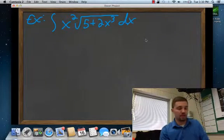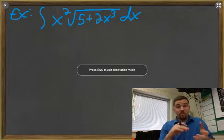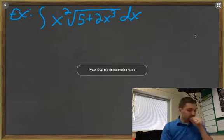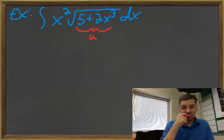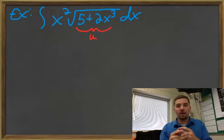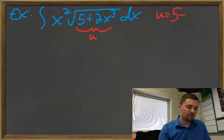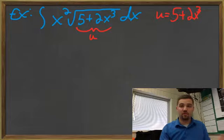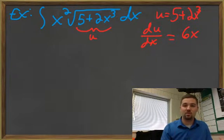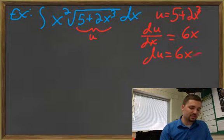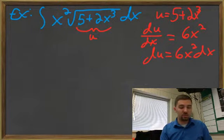Last example — let's buzz through this one. I'm looking for u first. I think I'm going to call 5 plus 2x cubed my u. How do you choose your u? I'm looking at this as a square root function, and inside the square root I've got 5 plus 2x cubed — that's how I chose u. Taking the derivative: du/dx equals 6x squared. I'm looking to get just du by itself, so du equals 6x squared dx, which is really good because I've got an x squared dx over there.